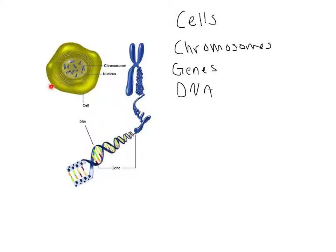That instruction manual is organized kind of like if you were putting together some Lego — there would be an instruction manual organized by chapter, by page, and so on. Inside the cell, in the nucleus, we have chromosomes. The chromosomes hold all the information the cell needs to reproduce itself — to make a perfect copy. The cell reads the chromosomes, and it tells exactly what to do: what color of hair to grow, what pigment of skin to grow.